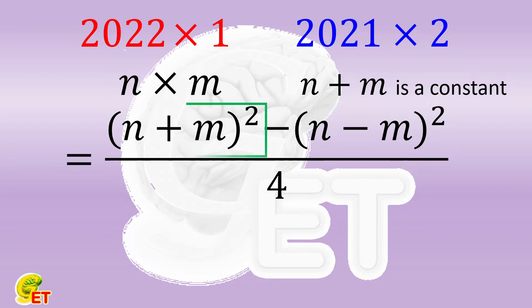Because the square of their summation is a constant, the bigger the difference between these two quantities, the smaller their product is.